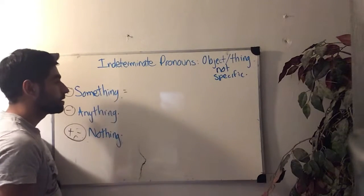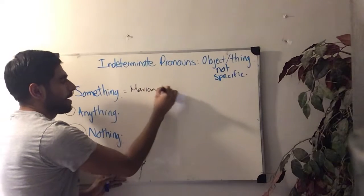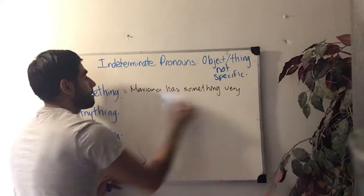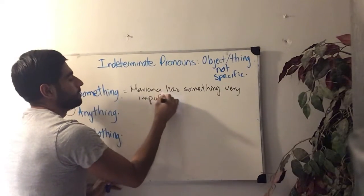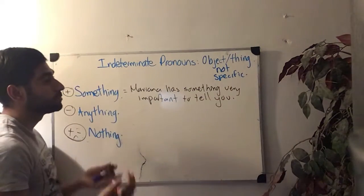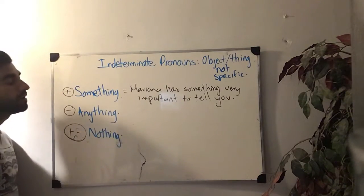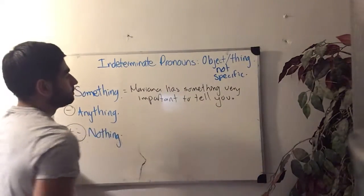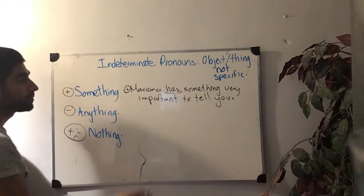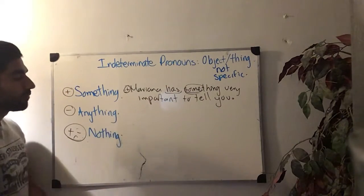I'm going to give an example so you guys can understand a little bit better. In this case we have: Mariana has something very important to tell you. As you guys can see, it is referring to a message — basically a message is an object or a thing, and you don't know what it is. So as you guys can see, this one is an affirmation. That's why we are using something, because we are referring to an object and you don't know what it is.